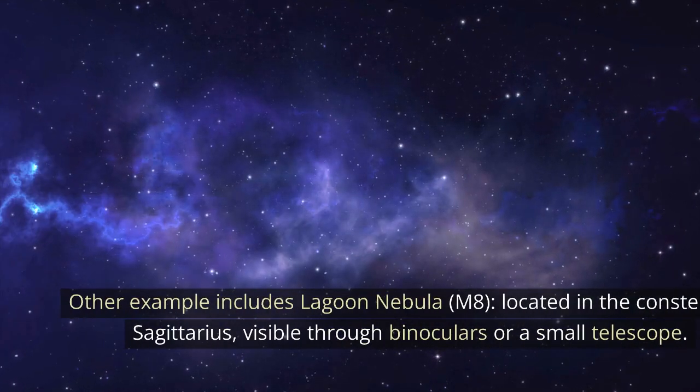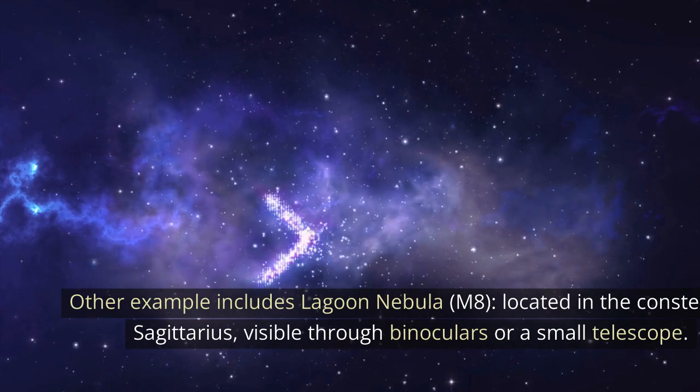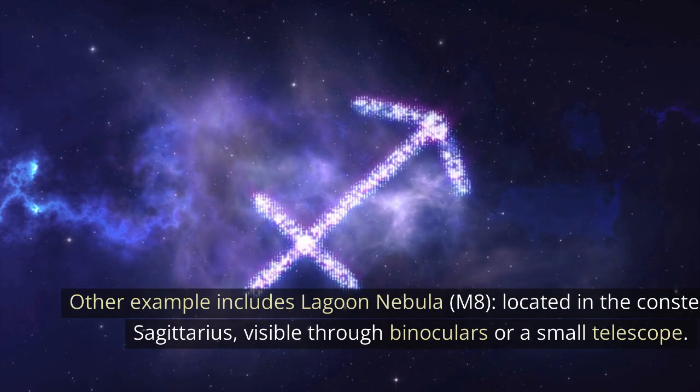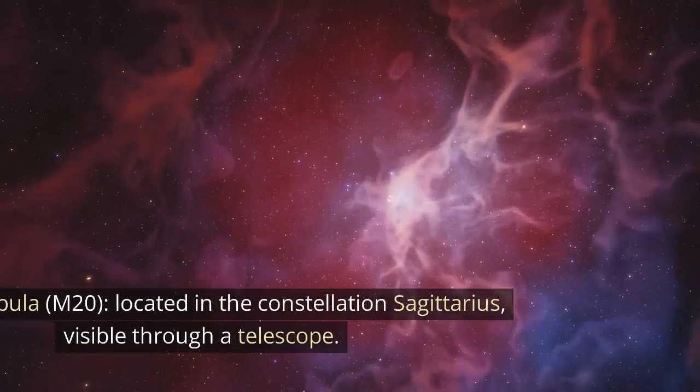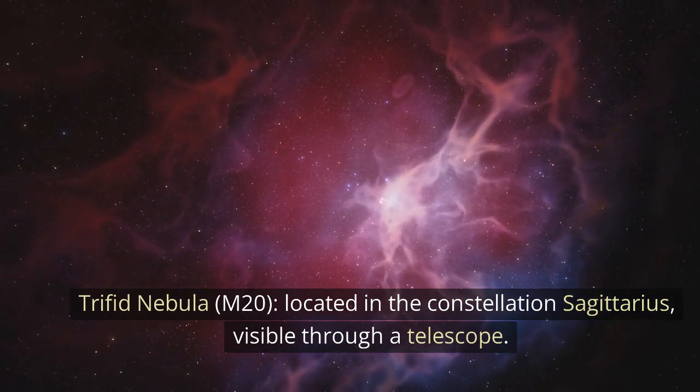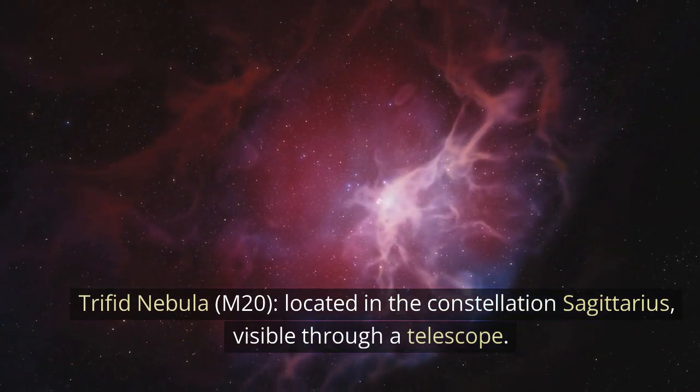Other examples include Lagoon Nebula, M8, located in the constellation Sagittarius, visible through binoculars or a small telescope. Trifid Nebula, M20, located in the constellation Sagittarius, visible through a telescope.